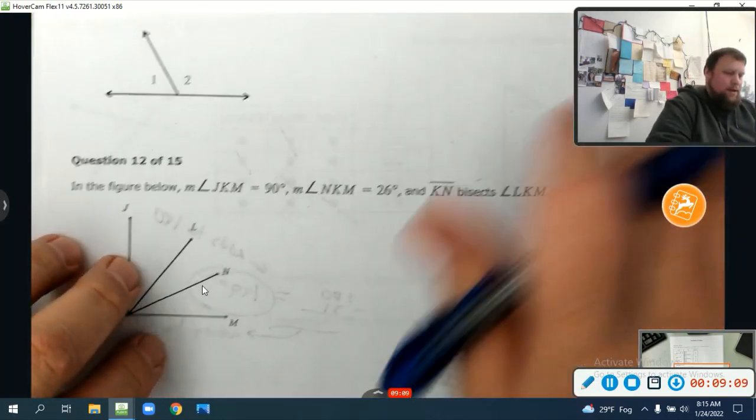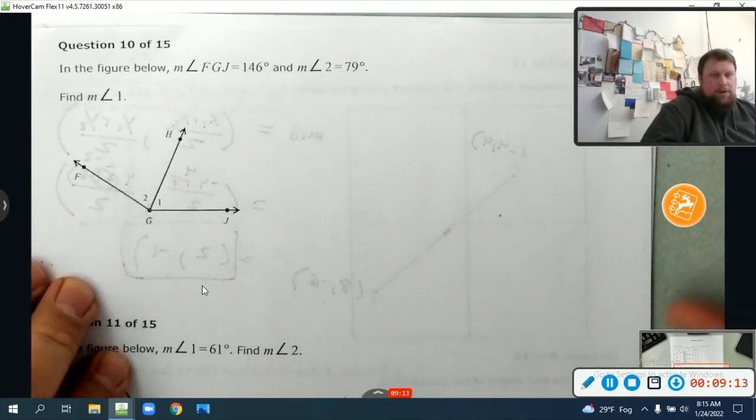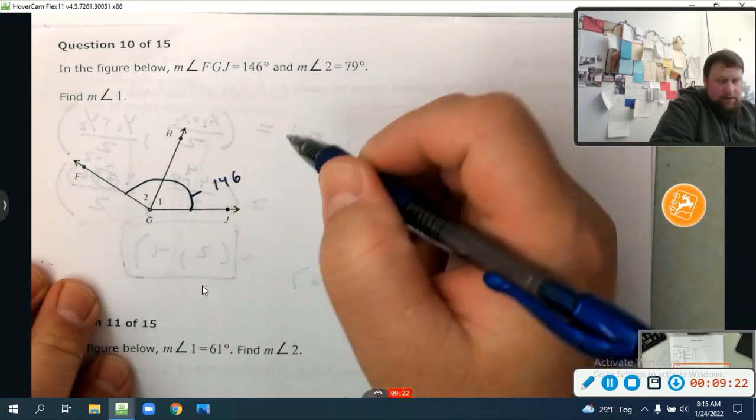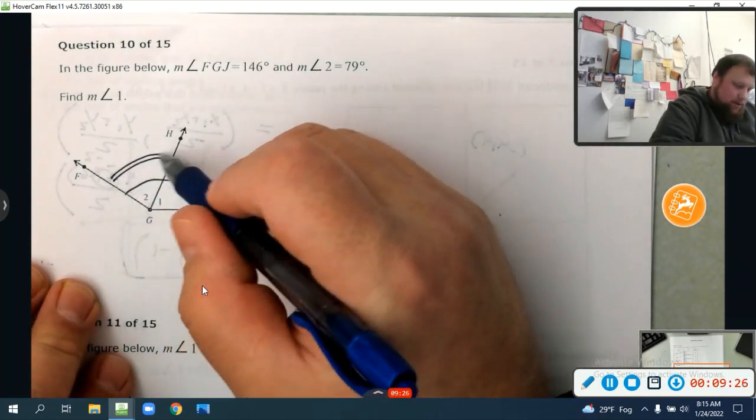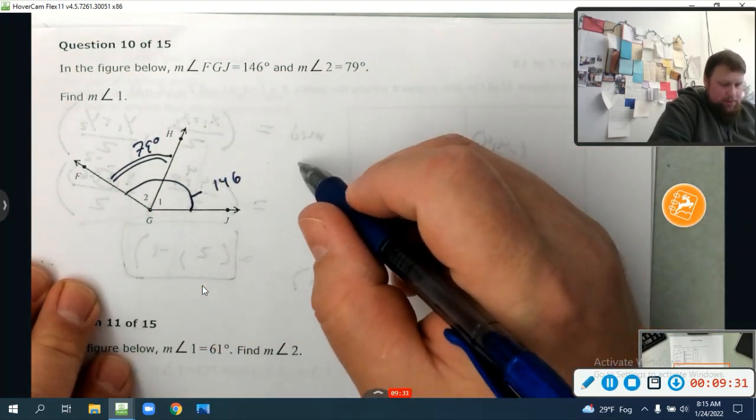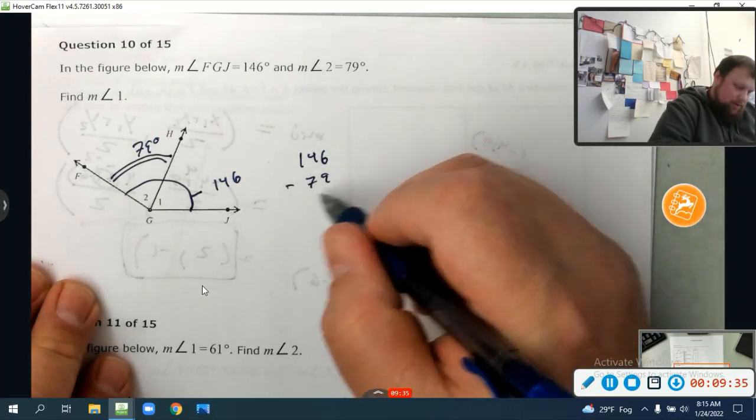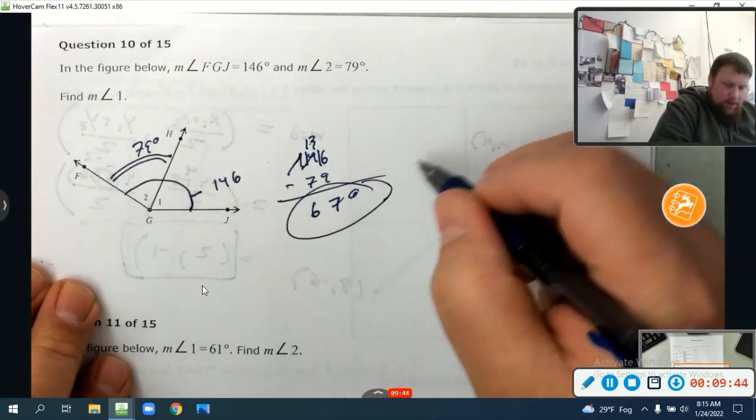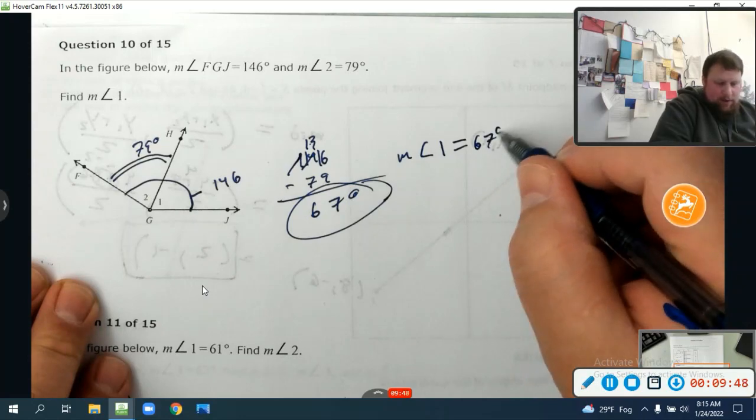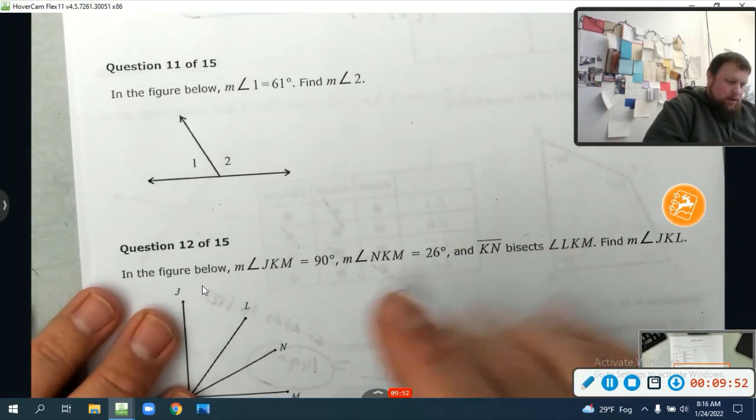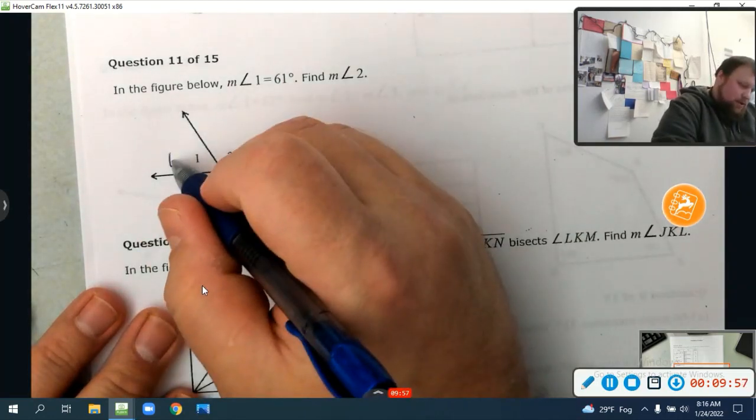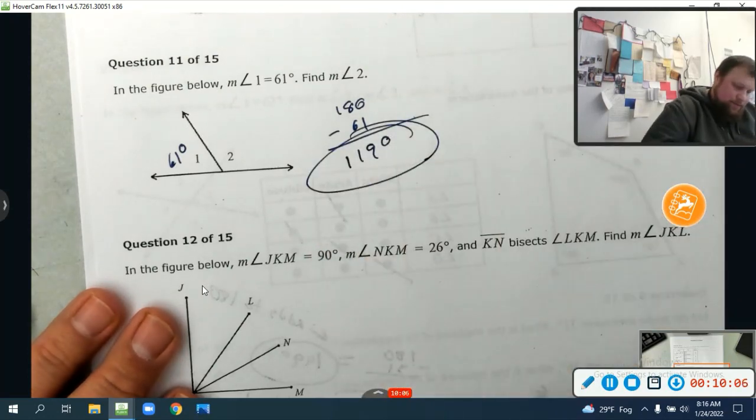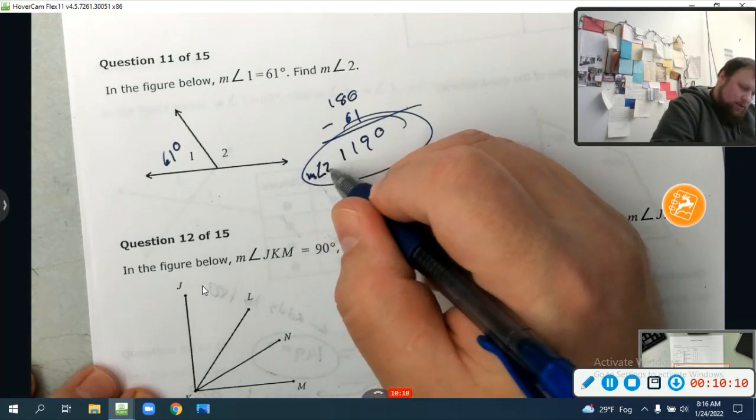In the figure below, measure of angle FGJ equals 146. So FGJ, the whole thing is 146. Measure of angle 2, this angle, is 79. Find the measure of angle 1. Well that's just going to be 146 minus 79, which is 67 degrees. So the measure of angle 1 is 67 degrees. These form a line. Lines are supplementary, they add to 180. So if the measure of angle 1 is 61 degrees, it's going to be 180 minus 61, which is 119 degrees. So the measure of angle 2 equals 119 degrees.